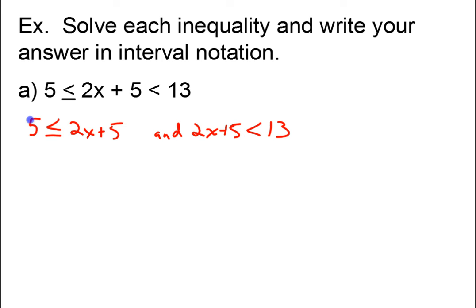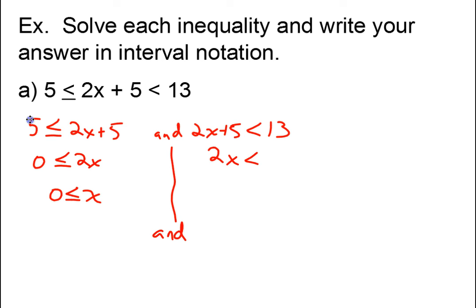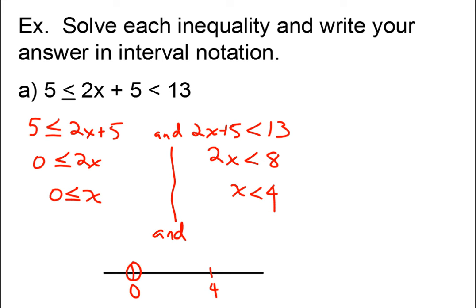To solve each one, I subtract 5 and get 2x is greater than or equal to 0. Divided by 2, I get x is greater than or equal to 0 — I always like to read inequalities from the x's perspective. On the other inequality, subtract 5 across and get 2x is less than 8; divided by 2, x is less than 4. Putting my two answers on a number line, I get 0 on the left and 4 on the right. Since 0 is inclusive it's colored in; since 4 is exclusive it stays empty.